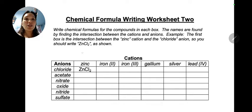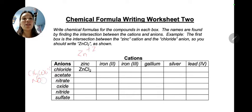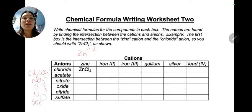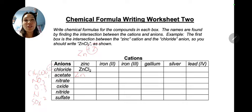Starting with the second row — for zinc acetate, zinc is positive 2 and acetate is CH₃COO⁻¹. Cross-multiplying, zinc gets a subscript of 1 and acetate gets a subscript of 2. So we write Zn(CH₃COO)₂. Since the subscript of acetate is 2 — other than 1 — we place it inside parentheses.